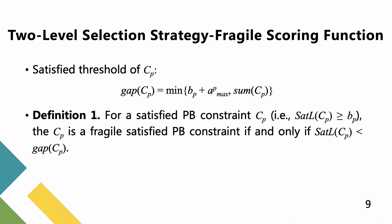Thus, to further choose a variable among those with the same best score value, we design a novel fragile scoring function denoted as HH-score. For a PB constraint Cp, GAP(Cp) is used to denote the satisfied threshold of Cp. Based on the satisfied threshold of PB constraints, we define a fragile satisfied PB constraint. For a satisfied PB constraint Cp, Cp is a fragile satisfied PB constraint if and only if set L(Cp) is less than GAP(Cp).